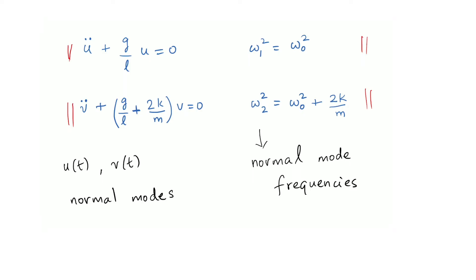Since each normal mode does not interact with the other, the energies of each are constant, and the total energy of the entire system is also constant. Whereas, if you look at it from the x,y coordinate system, the equation of motion for x involves y and vice versa, so the individual energies are not conserved, but miraculously the total energy is a constant of motion.